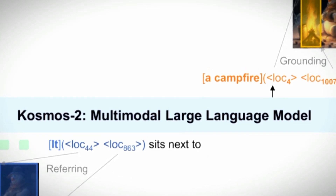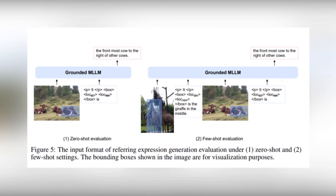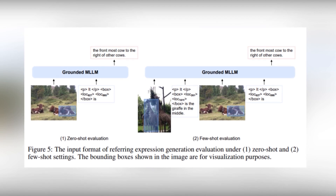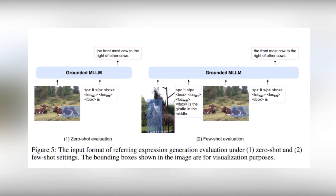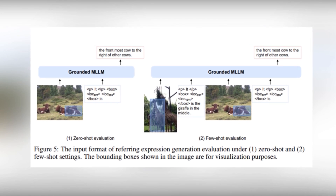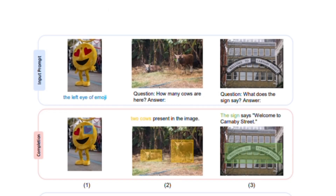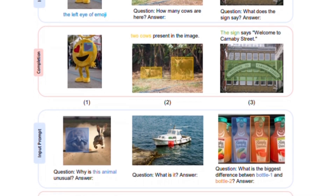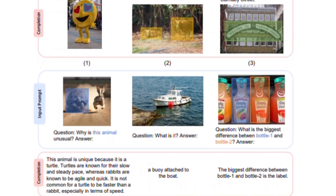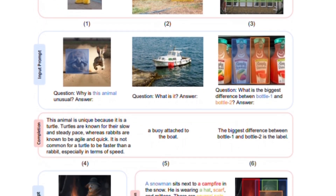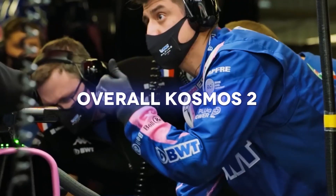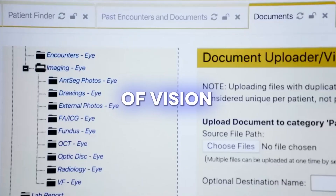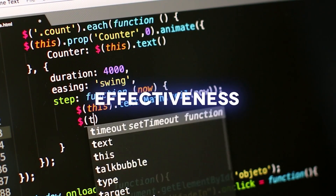Cosmos 2 also shone in the referring expression comprehension task, where the model had to locate specific objects described by text expressions within an image, and the results were remarkable. Its zero-shot performance was way ahead of previous models, showing that Cosmos 2 is a real superstar when it comes to understanding and pinpointing objects based on textual descriptions. Cosmos 2 also proved its skill in referring expression generation, generating unambiguous text descriptions of specific objects or regions within a bounding box. Overall, Cosmos 2 exhibits comparable performance to its predecessor, Cosmos 1, across a range of vision-language tasks — a testament to the model's prowess and the effectiveness of its training.